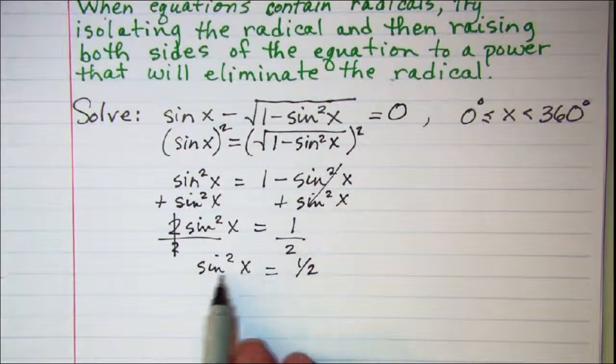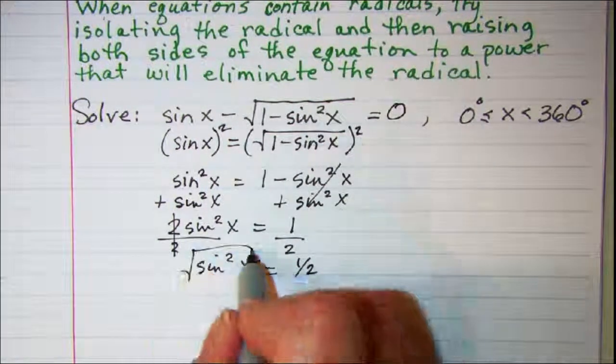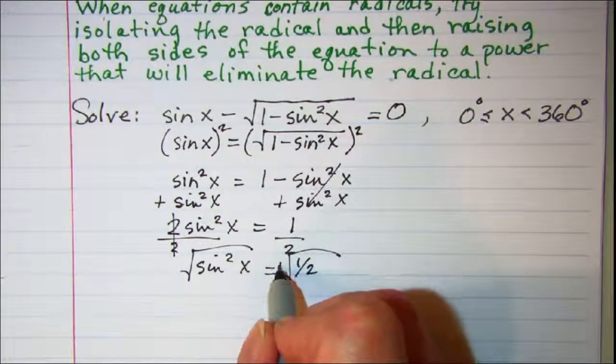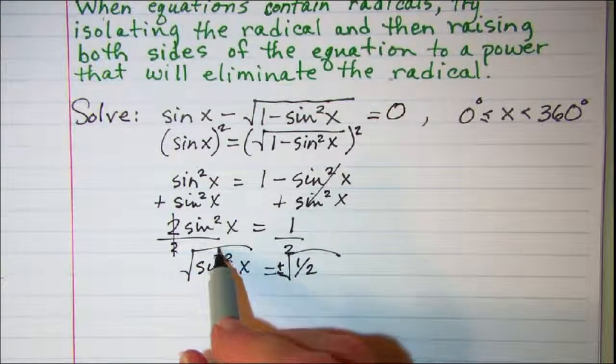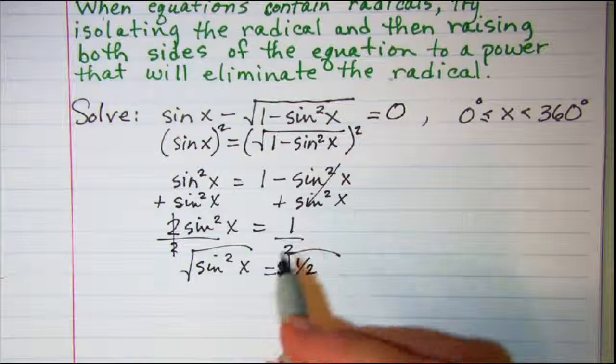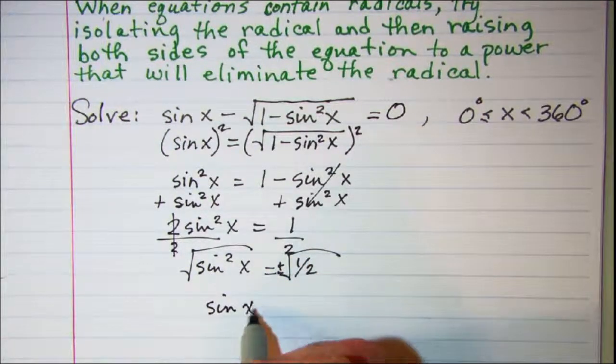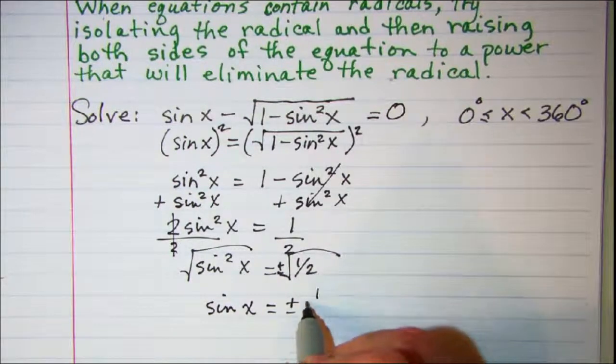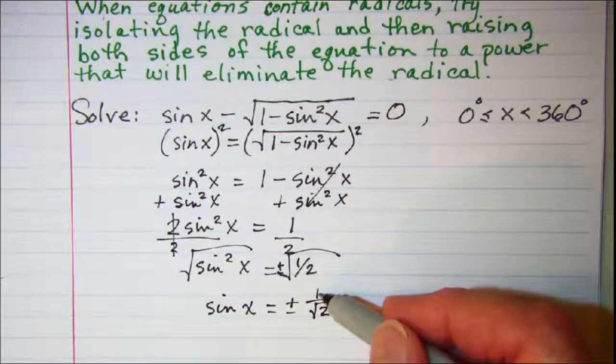To get sin x by itself, I need to square root both sides. Remember when you square root, you need plus minus. The square root and the square are inverse operations, so they cancel and I have sin x equals plus or minus 1 over the square root of 2.